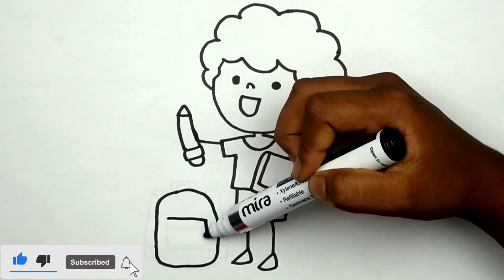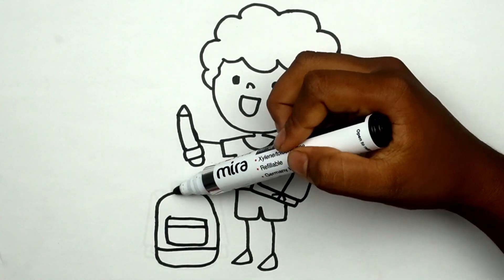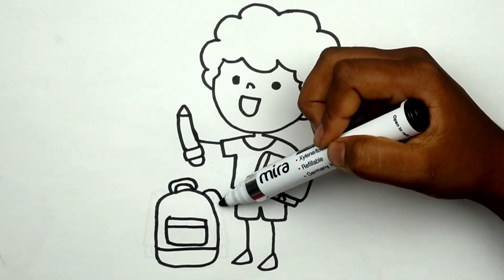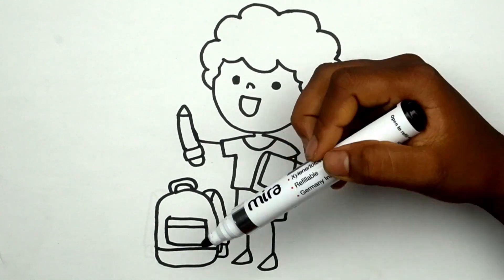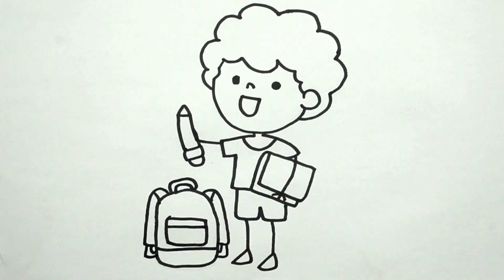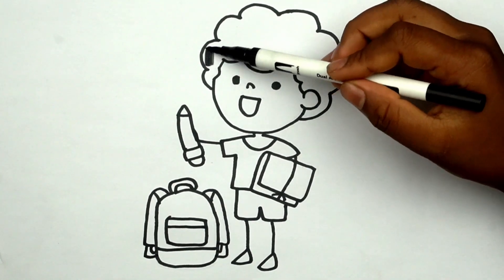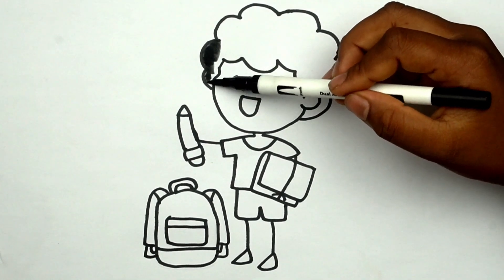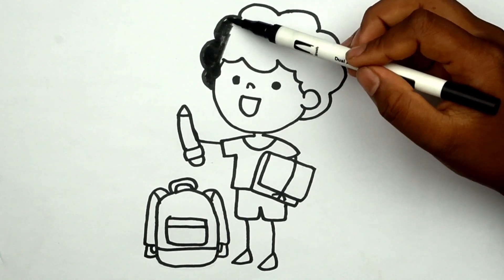A, B, C, D, E, F, G, H, I, J, K, L, M, N, O, P, Q, R, S, T, U, V, W, X, Y, and Z. Now I know my ABCs, next time won't you sing with me?